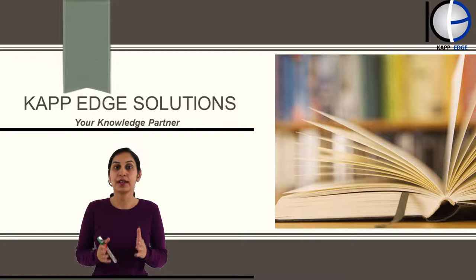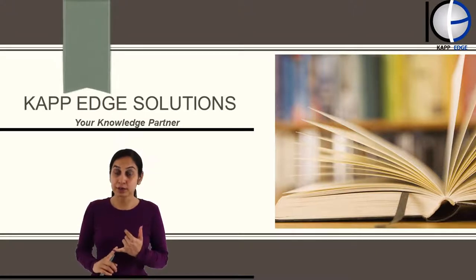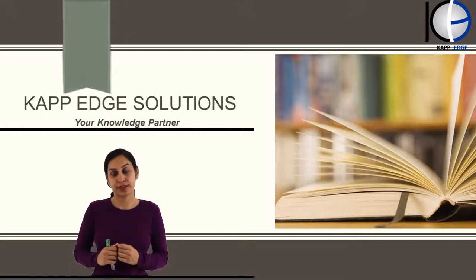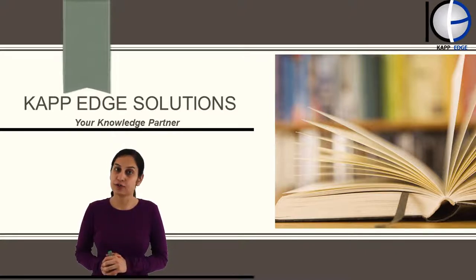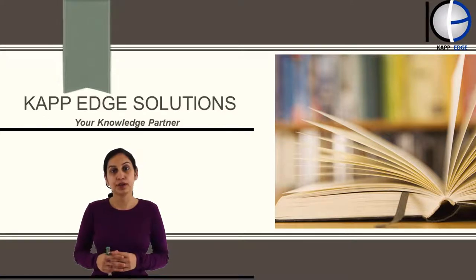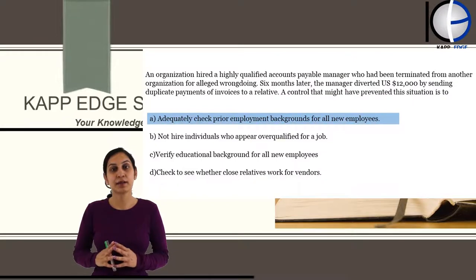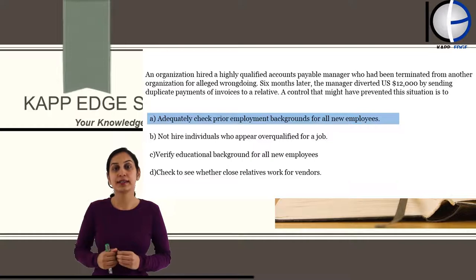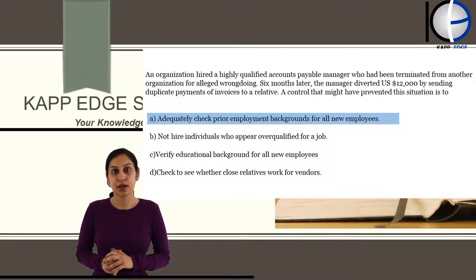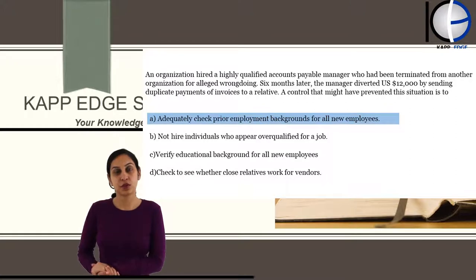Internal control has three objectives: operating objective, reporting objective, and compliance objective. The operating objective means operating activities are running smoothly and efficiently. The reporting objective means the company is transparent and fair in reporting to stakeholders. The compliance objective means all compliance-related requirements are being followed. Then comes COSO's guidelines. There is a body called the Treadway Commission which came into picture in 1985, with its primary purpose being to discuss internal controls' role in fraud detection and prevention.